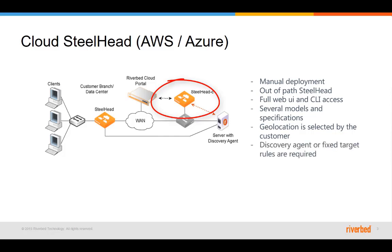Due to the out-of-path deployment there are two options to optimize the traffic: installing a discovery agent in the server, or using fixed target rules on the branch Steelhead pointing to the primary IP address of the Cloud Steelhead. Customers can select which servers they want to optimize.